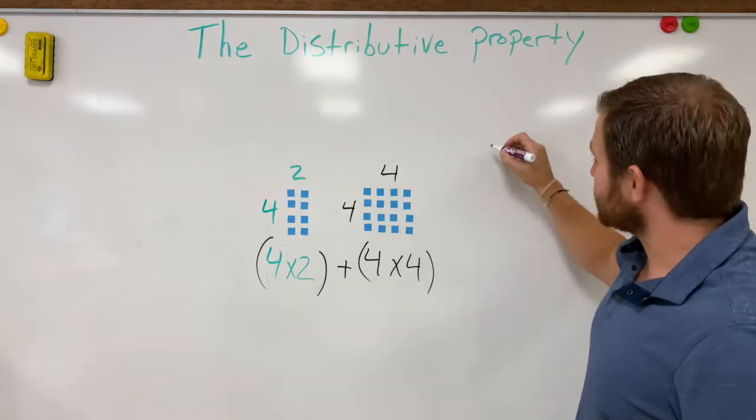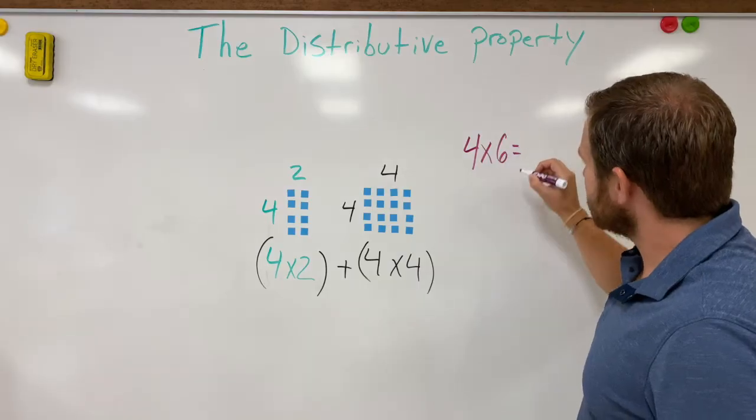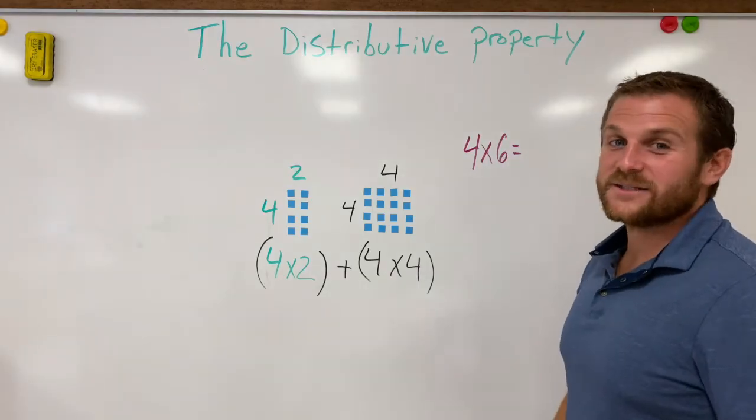Originally, our problem was four times six. So we're going to put four times six equals—four times six is 24.